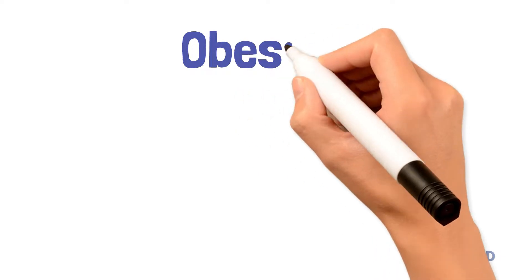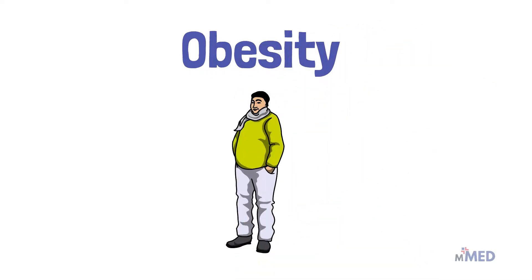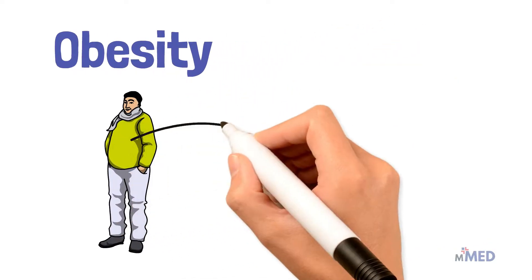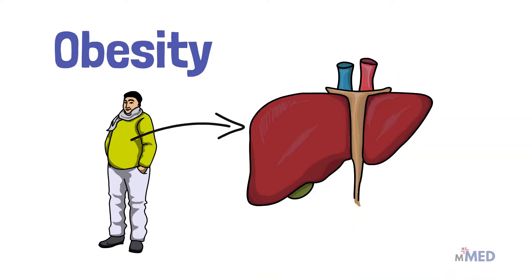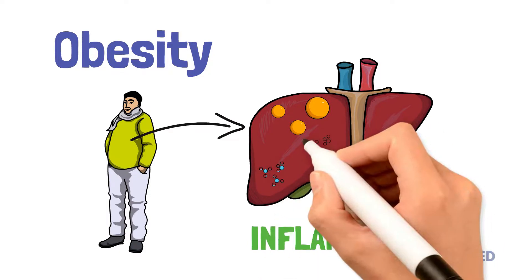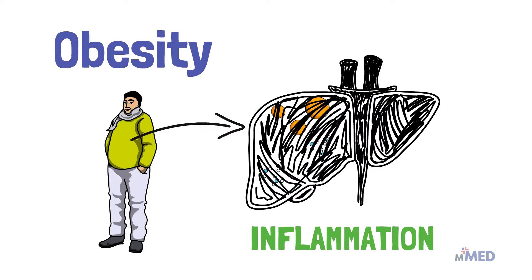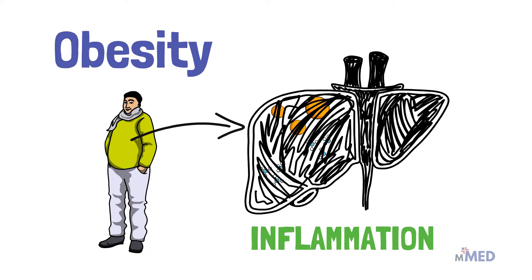Obesity is one of the main causes of fatty liver disease. It's a metabolic disease where fat gets stored and produced in liver cells. The problem is this develops a cascade of inflammation in the liver, and the extra fat cells put stress on the liver, which makes it swell.